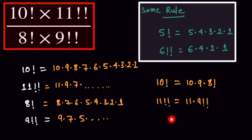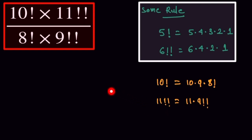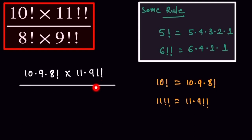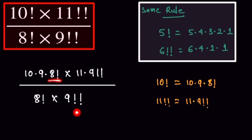Now we put the values of 10 single factorial and 11 double factorial into the original equation. We can write: 10 into 9 into 8 factorial into 11 into 9 double factorial, divided by 8 factorial into 9 double factorial. Here, the 8 factorial in the numerator and denominator cancel out.